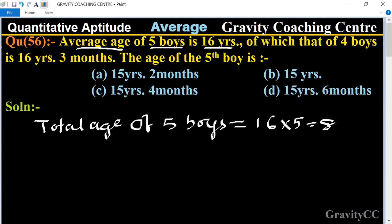And the total age of four boys equals 16 years 3 months, which means 16 and 3/12, multiplied by 4, equals 16 and 1/4, multiplied by 4.